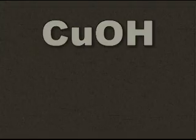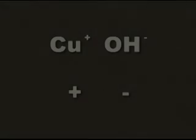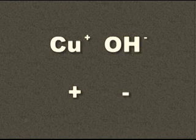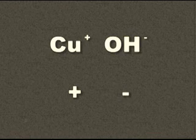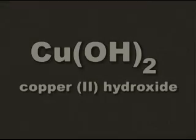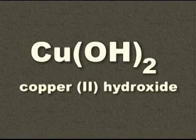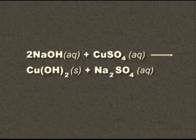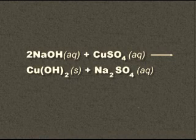Using the same technique as before, we can determine that copper in CuOH has a plus one charge. We can indicate this charge on paper by writing it in Roman numerals, or in voice by saying the number. CuOH is copper(I) hydroxide. Our first example, Cu(OH)2, is copper(II) hydroxide. Now we can say that sodium hydroxide was added to copper(II) sulfate to yield a copper(II) hydroxide precipitate.